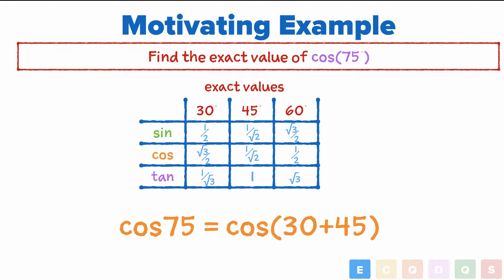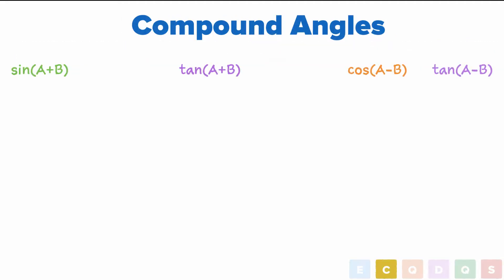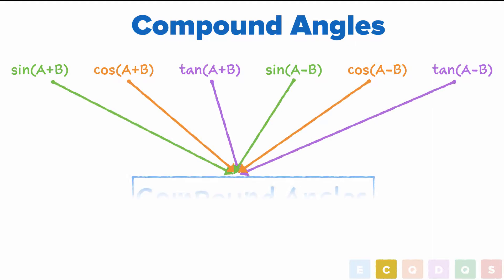Now, if only there was some way that we could take that further. Luckily for you, there is. When we take the sine, cos, or tan of the sum or the difference of two angles, we call it a compound angle, and we have special ways of expanding this into the sines, cosines, and tans we all know and love.